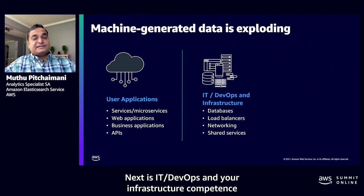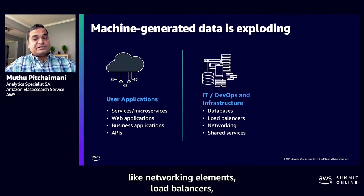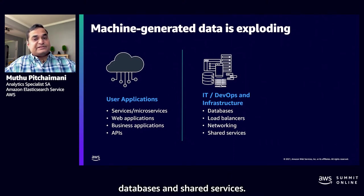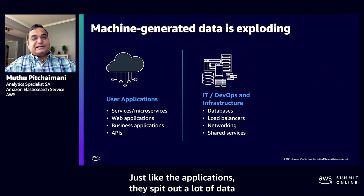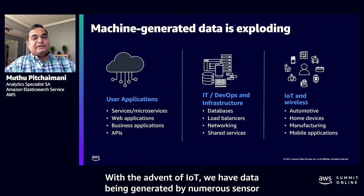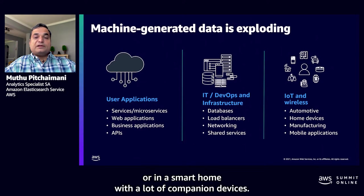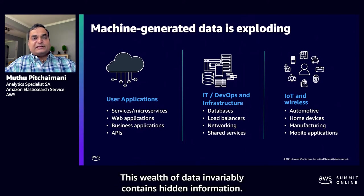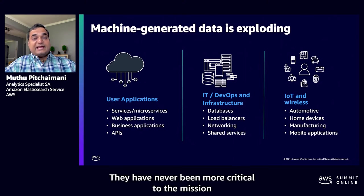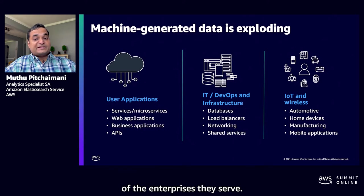Next is IT DevOps and infrastructure components like networking elements, load balancers, databases, and shared services — just like applications, they generate a lot of data during normal operation. With the advent of IoT, we have data being generated by numerous sensors and other devices, whether in a large manufacturing facility or in a smart home. This wealth of data invariably contains hidden information, and has never been more critical to the missions of the enterprises they serve, forming a rich source for gaining operational insights.